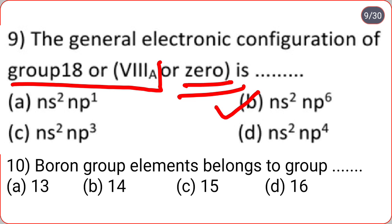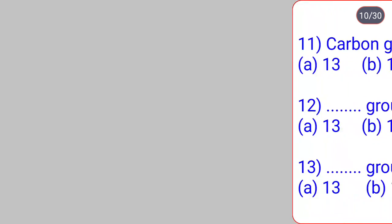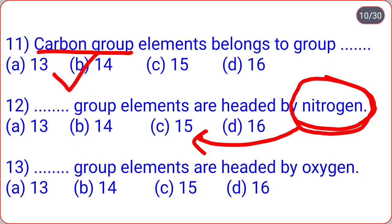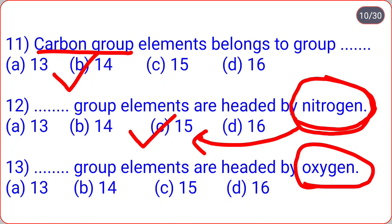Boron group elements belong to group 13 — option A. Carbon group elements belong to group 14. You may also be asked which group is headed by nitrogen — that is group 15, option C. The group headed by oxygen is group 16 — option D. Remember that group 17 is headed by fluorine.